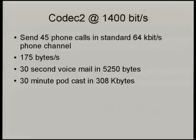What can you do with a speech codec at 1,400 bits per second? A standard phone call goes through a 64 kilobits per second channel — your standard landline call over fiber or ISDN. We can send 45 of those phone calls over one 64 kilobit per second channel. We can record a 30-second voicemail in just 5 kilobytes, or squeeze 30 minutes of audio books or podcasts into just 300 kilobytes. Because it's optimised for speech, it won't do music at those rates — it'll only work for voice.